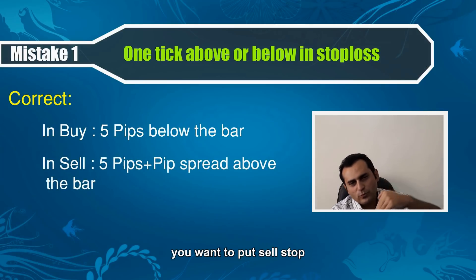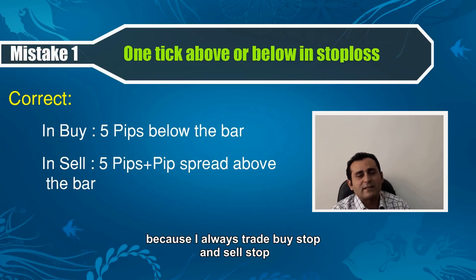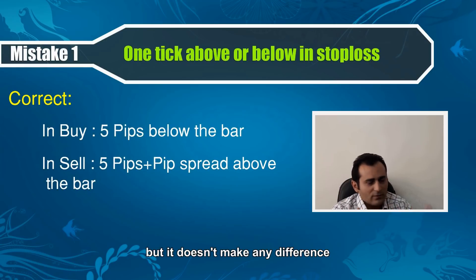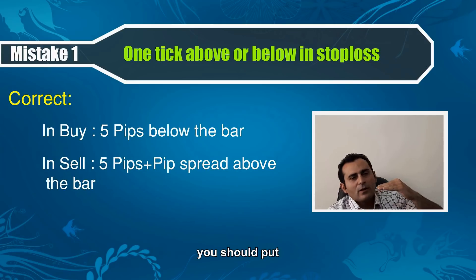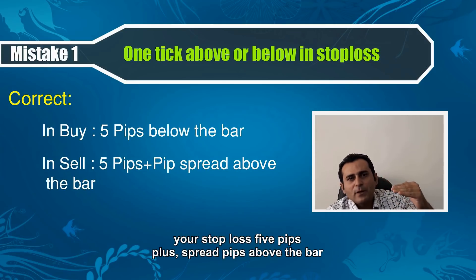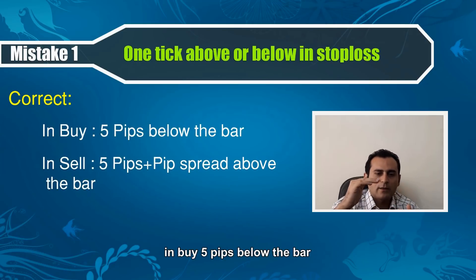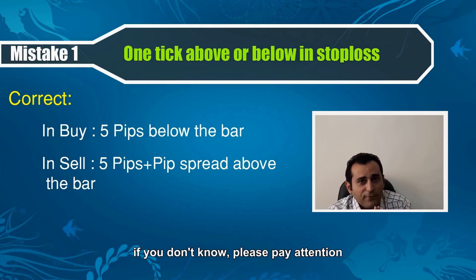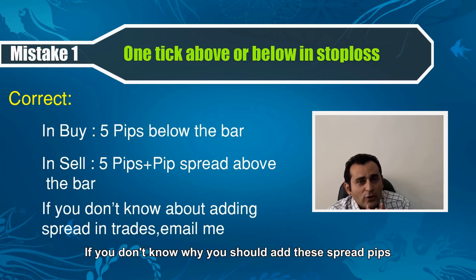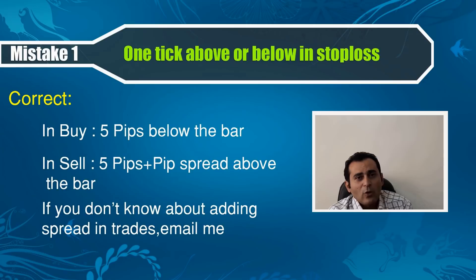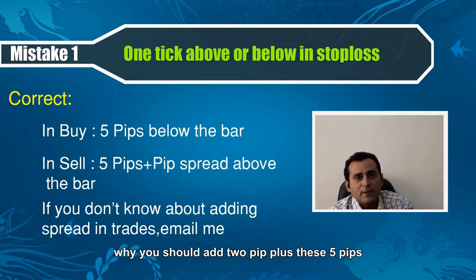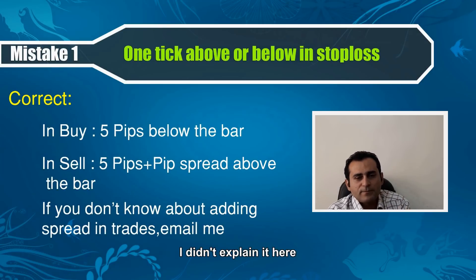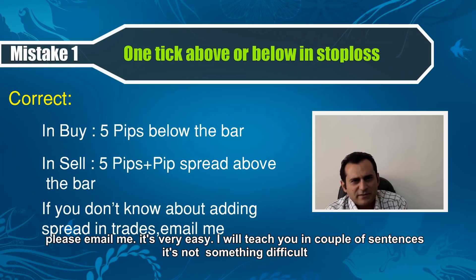In a sell stop, you should put your stop loss five pips plus spread pips above the bar you want to place your stop loss. In buy: five pips below the bar. In sell: five pips plus spread pips. For example, in EURUSD the spread is two pips, so you would add those two pips plus the five pips. If you don't know why you should add the spread pips, please email me, because it's very important. I didn't explain it here because it wasn't my original mistake — it's very easy and I can teach you in a couple of sentences.